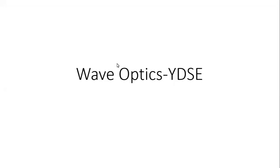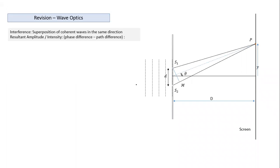Good morning. The topic for this session is wave optics, and we are going to cover the topic of YDSE — the double slit experiment. YDSE is essentially an application of the principle of superposition, specifically interference. Interference is the superposition of coherent waves traveling in the same direction.